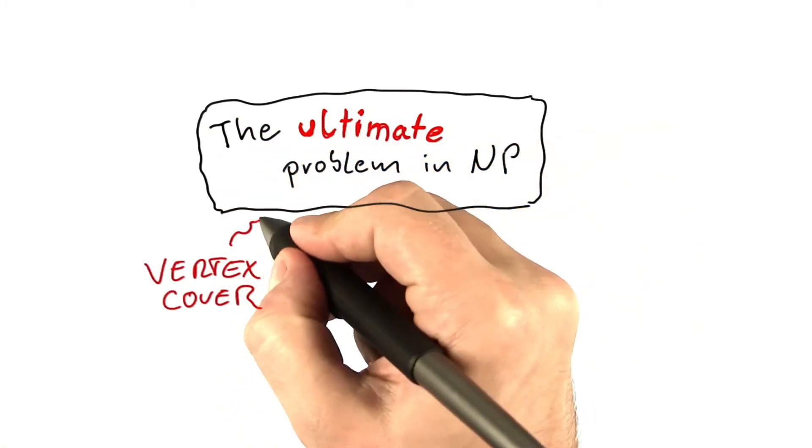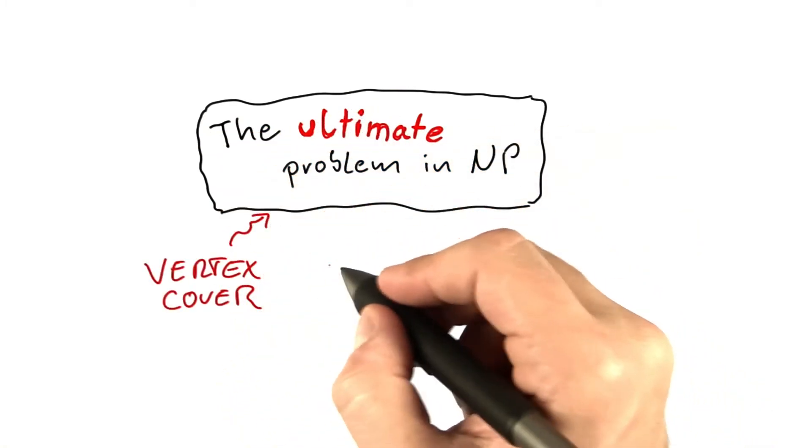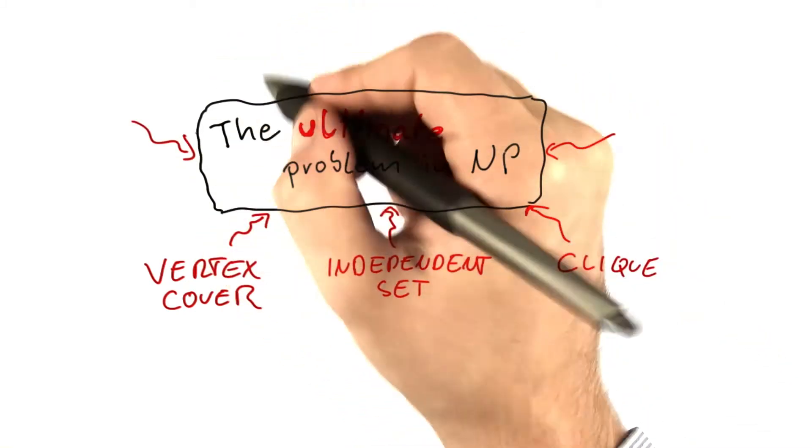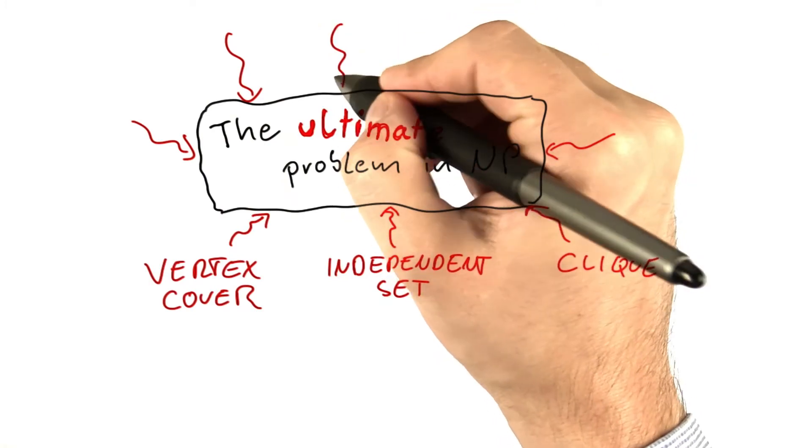So we would have vertex cover, which could be reduced to that problem. We would have independent set which could be reduced to that problem and also clique of course, and any other problem in NP as well.